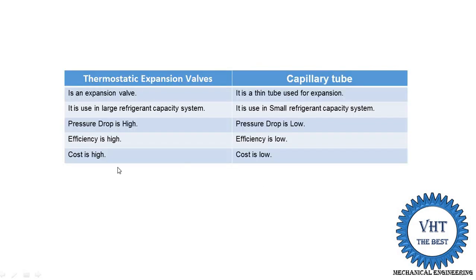The cost of the expansion valve is high because it has complicated construction and contains a number of parts. The capillary tube is a simple thin diameter tube, so its cost is lower.